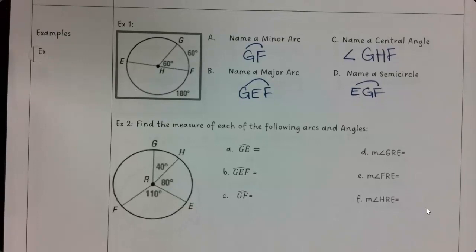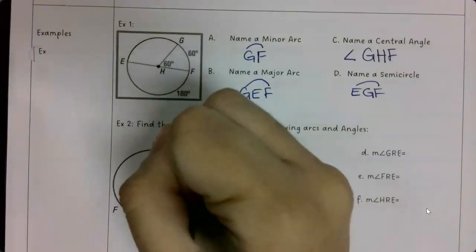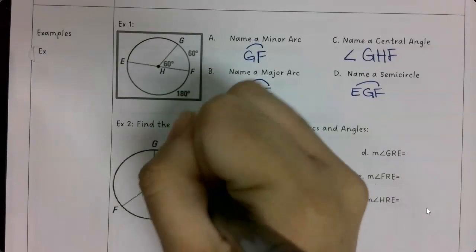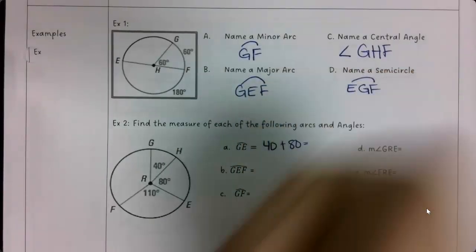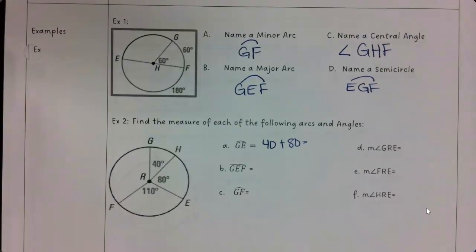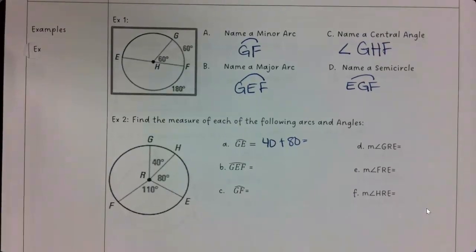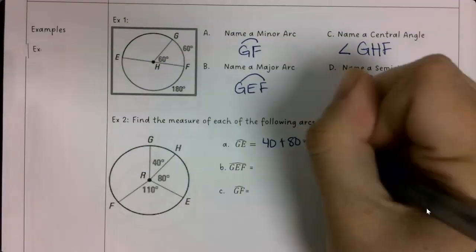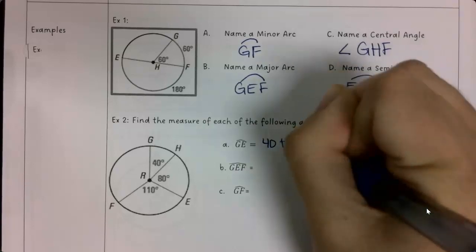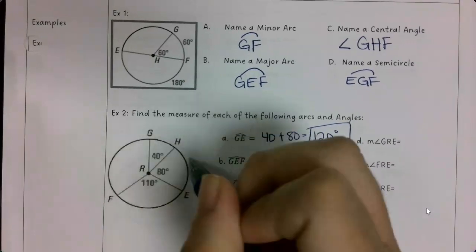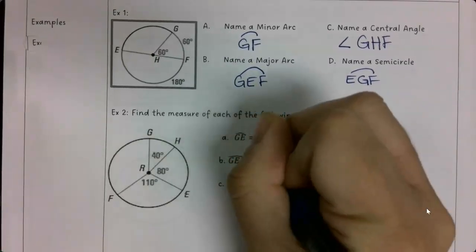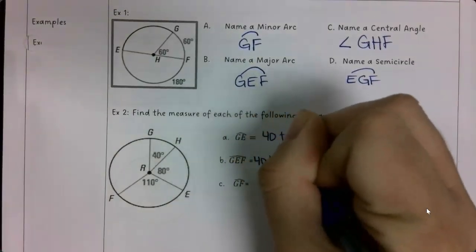Okay, number two wants me to find the measure of each of the following arcs and angles. So GE is the shorter distance from G to E. So I need to add 40 and 80 together. Which gets us 120. Then I have GEF. So I go all the way around. That's 40 plus 80 plus 110.